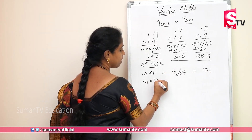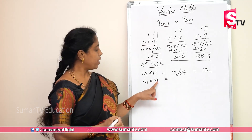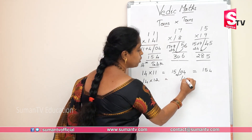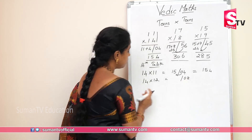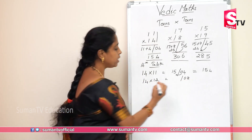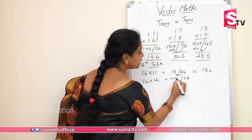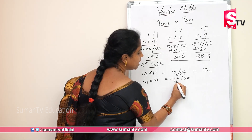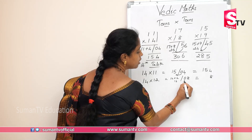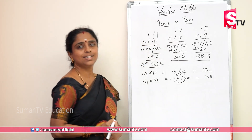14 into 12. Now, 2 fours are 8 — that is 0,8. 14 plus 2: you will be getting 16. Write 8 here. 0 plus 16 is 16. So 14 into 12 is 168.